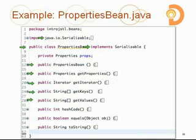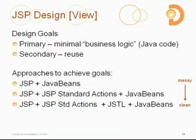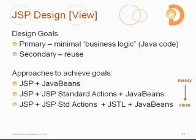Now that we've examined the requirements of a model, let's look at a view. When building a view within a Java web application, the most typical technology is a JSP. The first design goal is to have the least amount of Java logic as possible within the JSP, meaning its primary focus is on rendering HTML. The second design goal is reuse — creating a single screen that can be reused multiple times throughout the application, which lends itself to the idea of creating cohesion within the JSP.